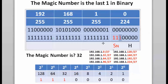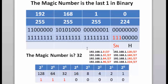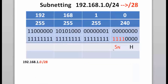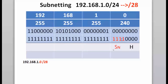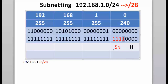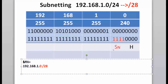Now let's try it with a slash 28 subnet mask. Starting from 192.168.1.0 slash 24 and subnetting to slash 28 means borrowing four bits, giving us 28 ones counted from left to right, and a 255.255.255.240 subnet mask, since 128 plus 64 plus 32 plus 16 is 240. The last one is in the 16's place — that is the 128's place, the 64's place, the 32's place, the 16's place — so the magic number is 16.